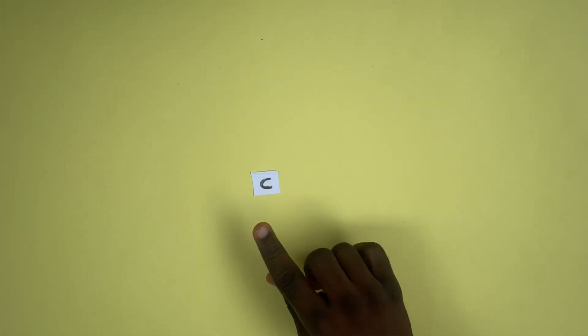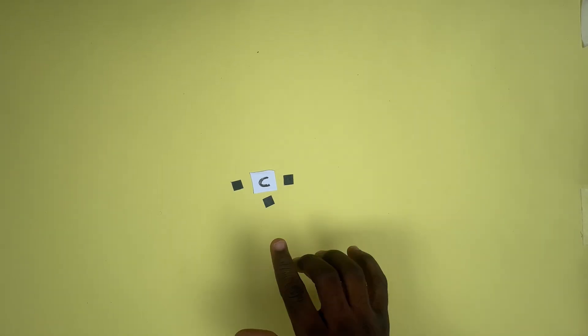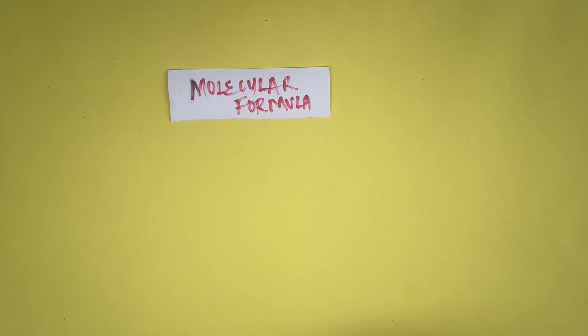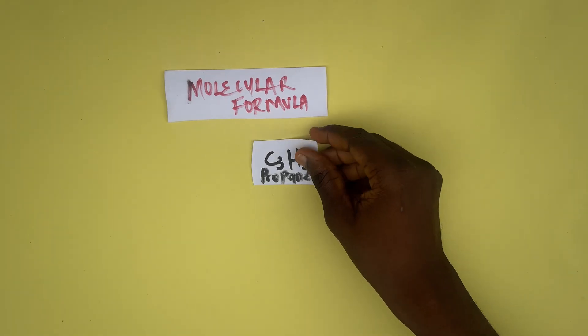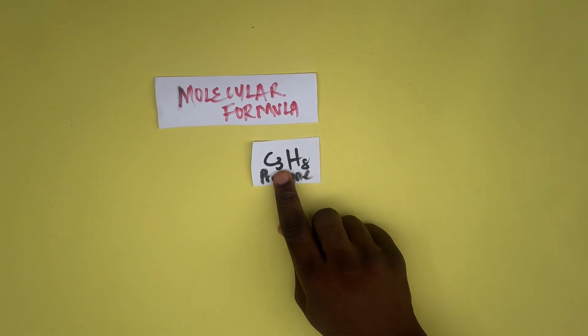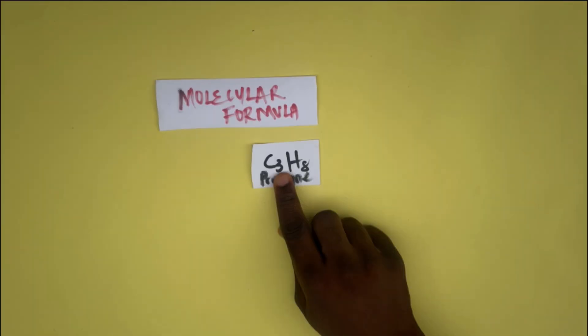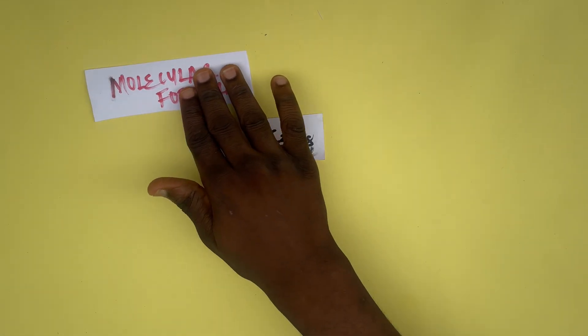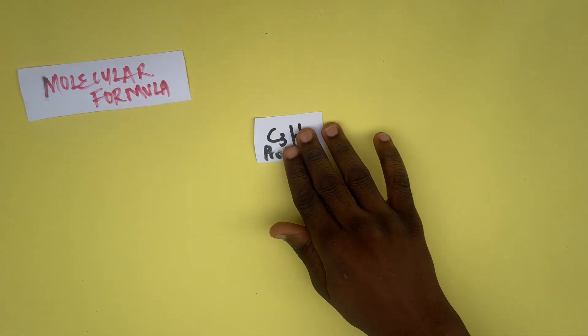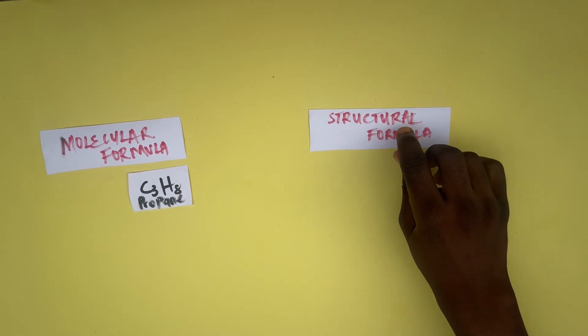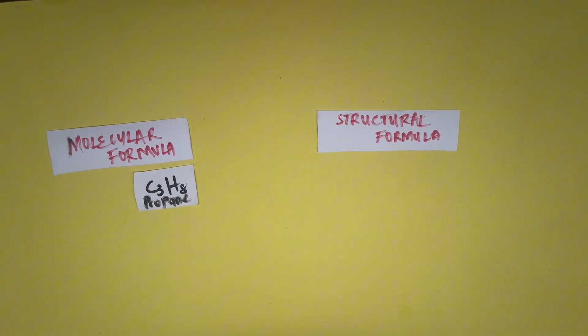Representation of organic compounds. The first thing to understand is that carbon is a tetravalent element, meaning it has four electrons in its outer shell and can form four single bonds. The first representation is the molecular formula. For example, propane has the molecular formula C3H8, meaning there are three carbons and eight hydrogens. The second is the structural formula.